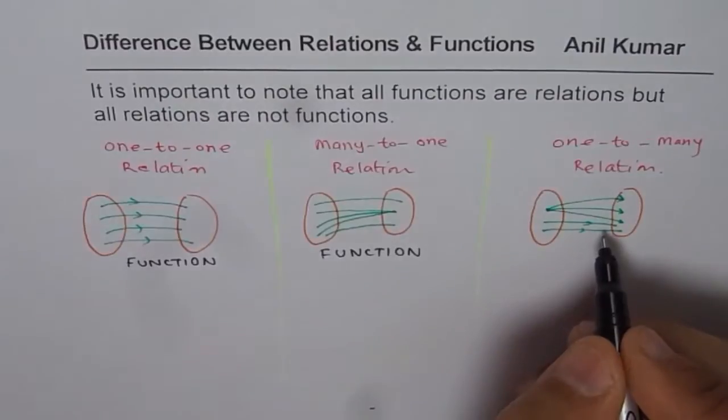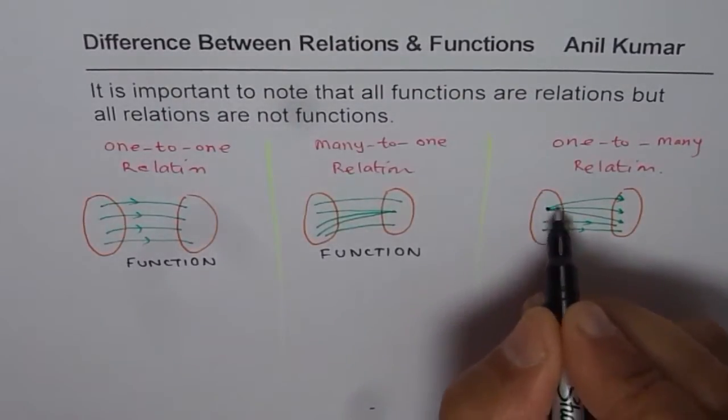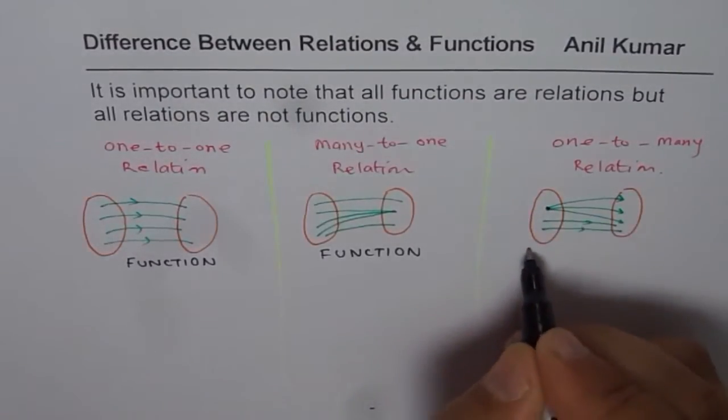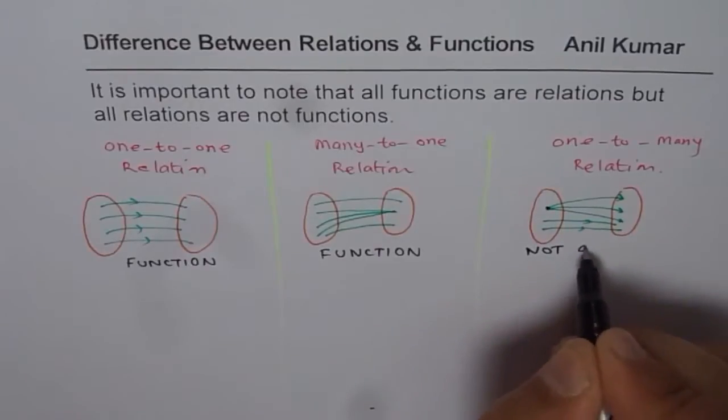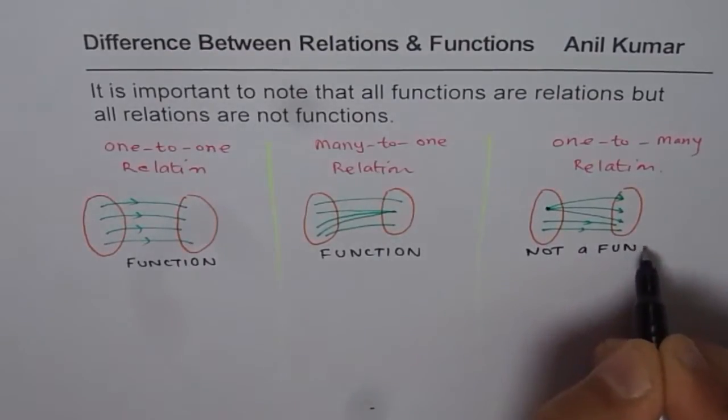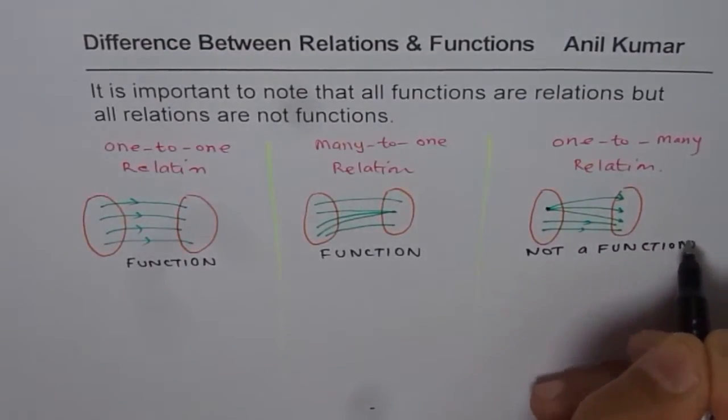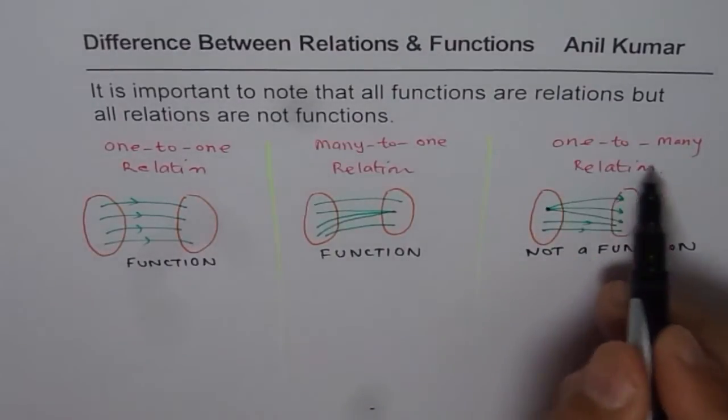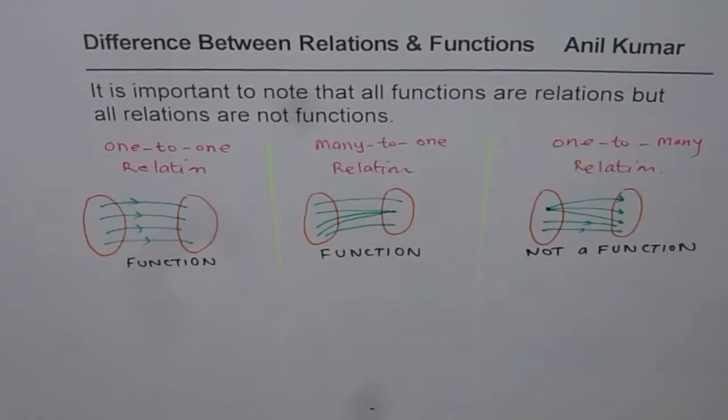In this particular case, this element is connected with many and therefore, this is not a function. All the relations which are one-to-many are not functions. That is a general statement which you could always use.